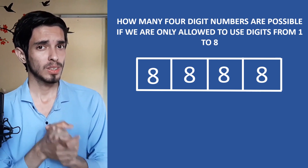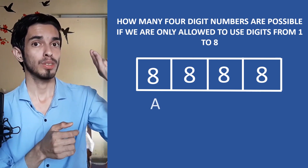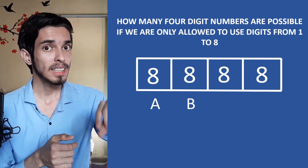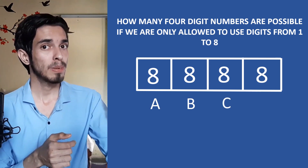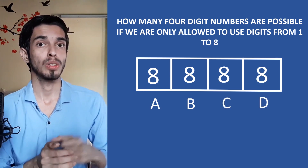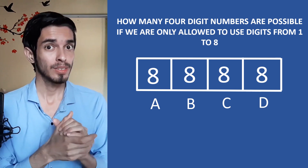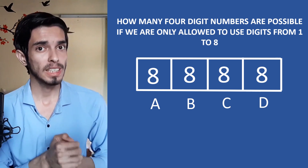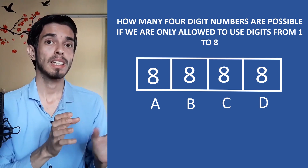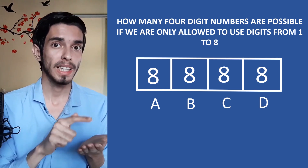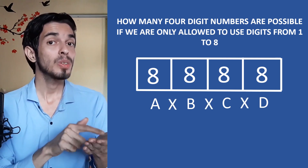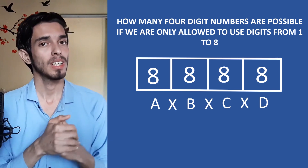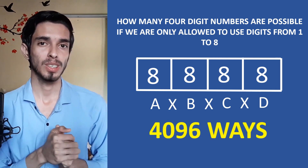For this whole task, we have A ways to do the first part, B ways for the second, C ways for the third, and D ways for the fourth — so we use the rule of products. The number of ways to construct a four-digit number using only digits from one to eight is eight × eight × eight × eight, which is eight raised to the power four. That is our answer.